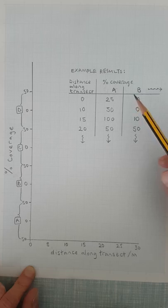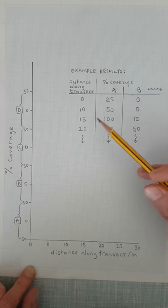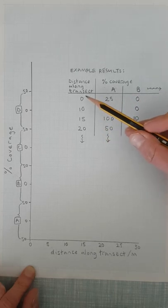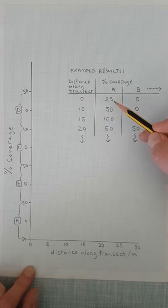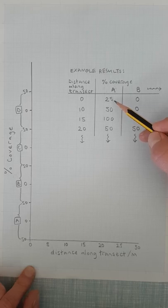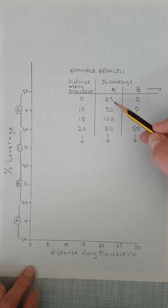I've just got some example results here. We've got distance along the transect here, and then we've got for A—so at 0 meters along the transect when you laid your quadrat there was approximately 25 percent of the quadrat covered with A.